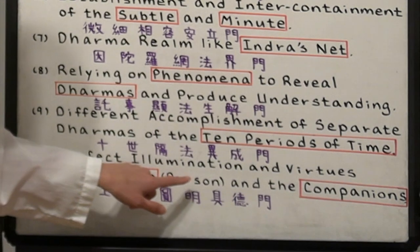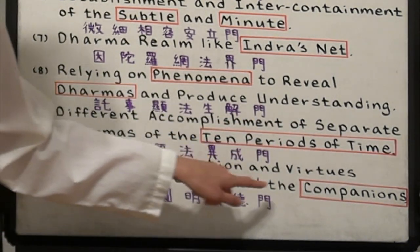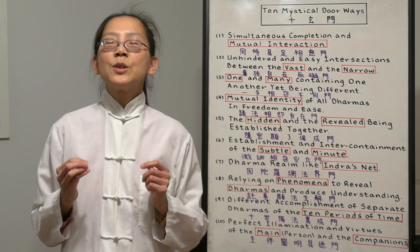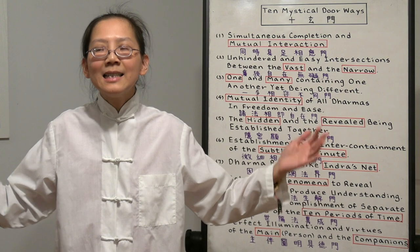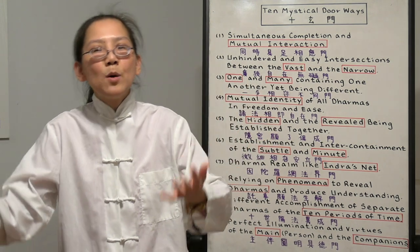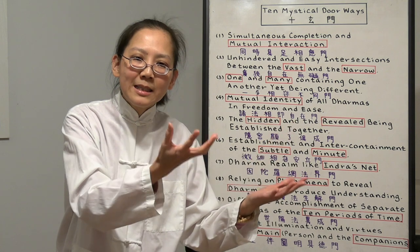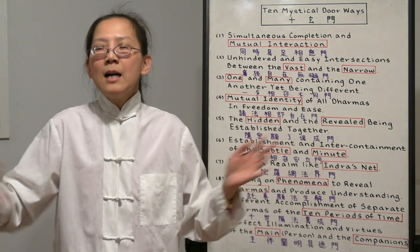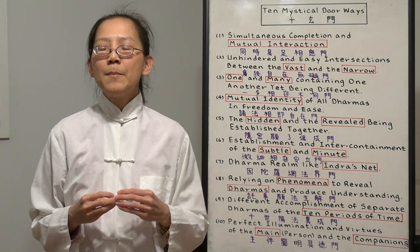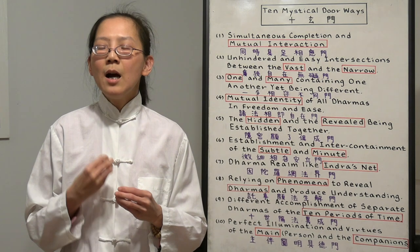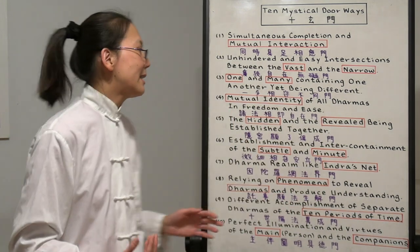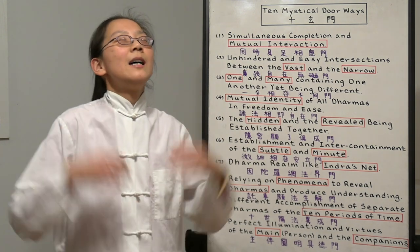Number 10, perfect illumination and virtues of the main person and the companions. The main person usually is talking about the Buddha. Because in one world, there's only one Buddha. But there will be many companions, many Bodhisattvas to support this Buddha. For example, Shakyamuni Buddha, Samantabhadra Bodhisattva, and Manjushri Bodhisattva. They are supporting Shakyamuni Buddha. But their merits are exactly the same. You cannot say one is higher than the other. They are all talking about our own Buddha nature. So we are Shakyamuni Buddha. We are the Bodhisattva. You should have the compassion just like they are. So this is the 10 mystical doorways of the world of the Buddhas.